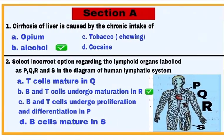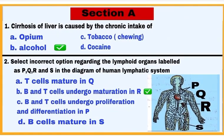Section A has 16 questions of one mark each. Out of these, question numbers 1 to 12 are multiple choice questions. Here are question numbers 1 and 2, and 3 and 4.